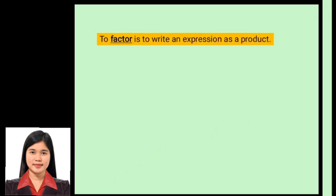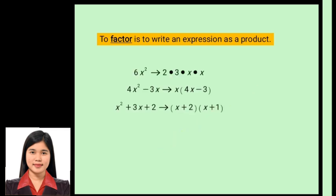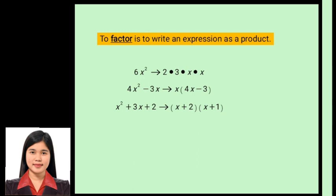To factor is to write an expression as a product. For example, the factors of 6x² are 2 times 3 times x times x. Next, the factors of 4x² minus 3x are x times (4x minus 3). And the factors of x² plus 3x plus 2 are (x plus 2) times (x plus 1).